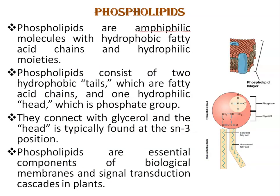The structure of phospholipids — they are amphiphilic molecules. Amphiphilic means having two distinct identities: a polar end that is attracted to water and a non-polar end that is repelled by water. Phospholipids are amphiphilic molecules with hydrophobic fatty acid chains and hydrophilic moieties. Just look at this diagram — this shows the structure of the plasma membrane, with phospholipids present as phospholipid bilayers. This is the structure of a phospholipid molecule. Phospholipids consist of two hydrophobic tails, which are fatty acid chains.